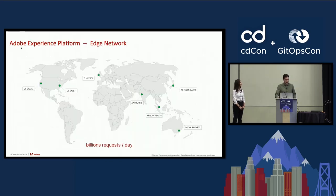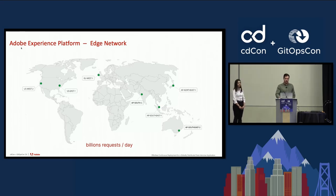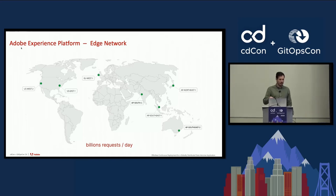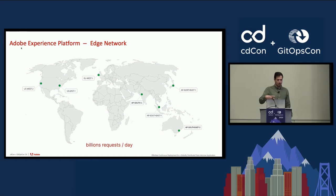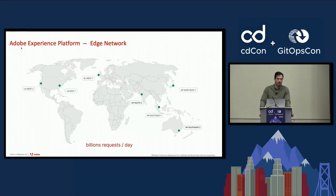The business critical service we implemented continuous deployment for is part of Adobe Experience Platform Edge Network, which offers various digital marketing capabilities from data collection to delivering real-time personalized experiences. More specifically, our service is the server-side orchestrator that coordinates access to all Adobe Experience Cloud solutions present in seven geographically distributed regions. So our service is on the critical path, impacting the availability of the entire solution stack.